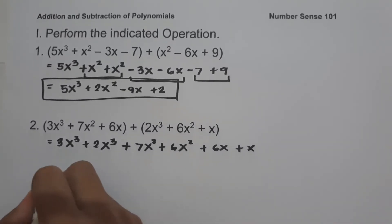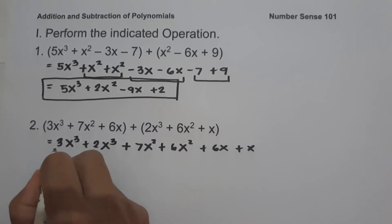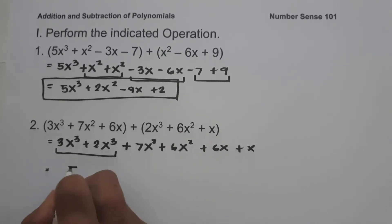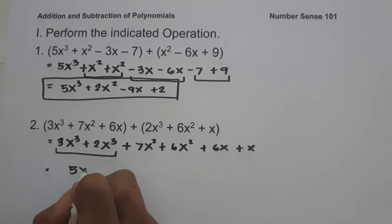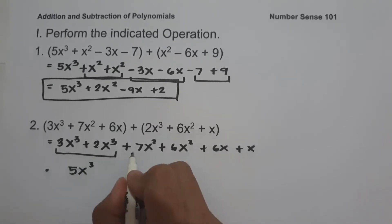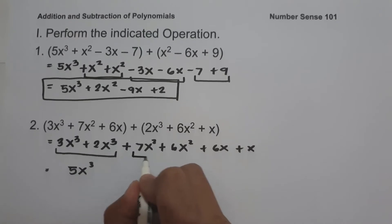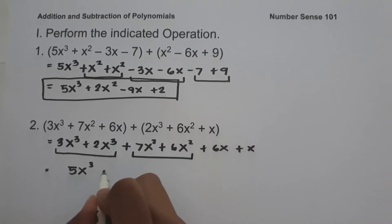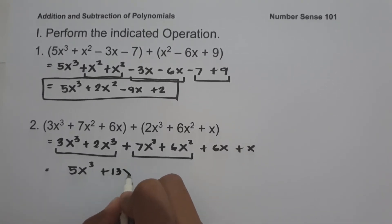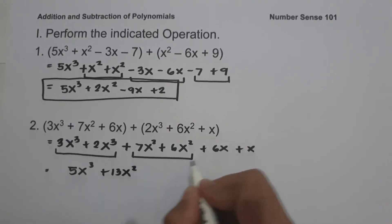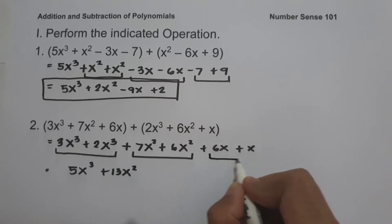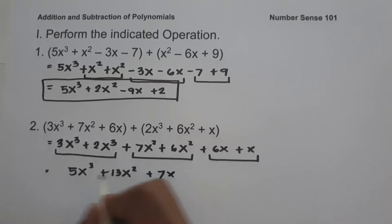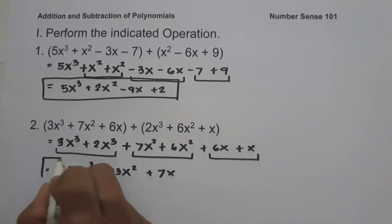So let us simplify: 3x cubed plus 2x cubed is 5x cubed, 6x squared plus 7x squared is 13x squared, and 6x plus x is 7x. And this will be our answer.